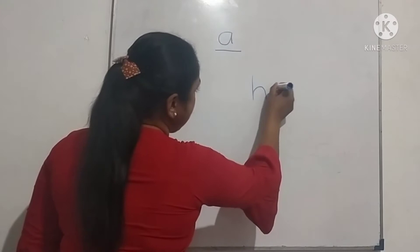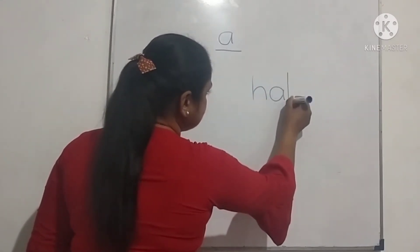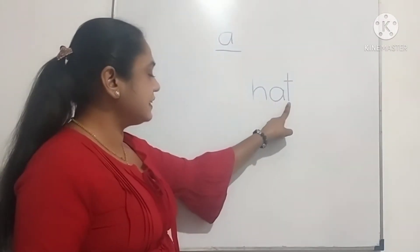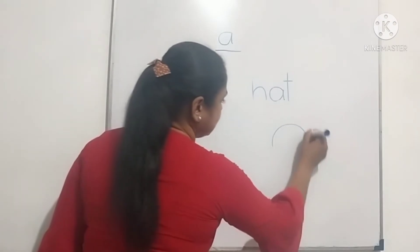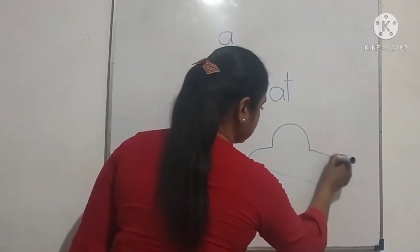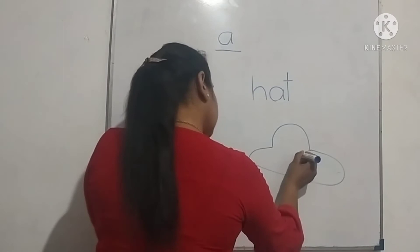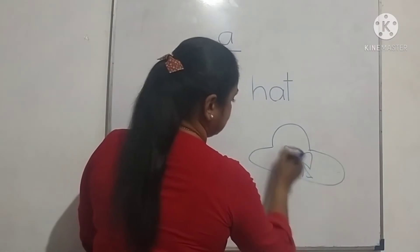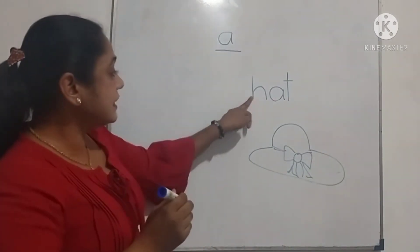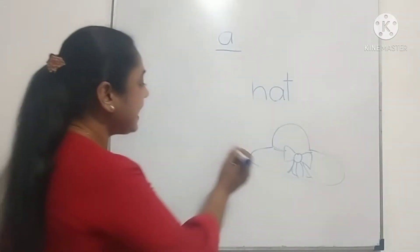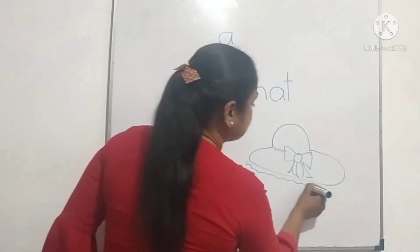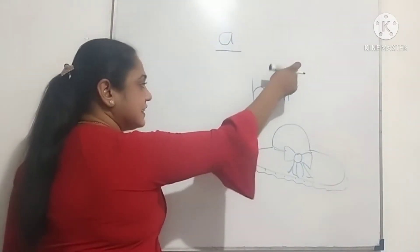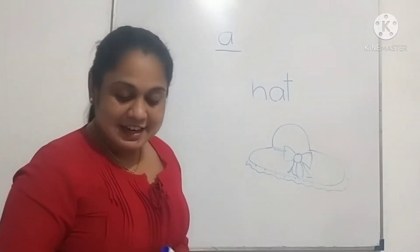H, A, T — Hat. H, A, T — Hat. Right. H, A, T — Hat. H, A, T — Hat. H, A, T — Hat. For this one: H, A, T — Hat. Next.